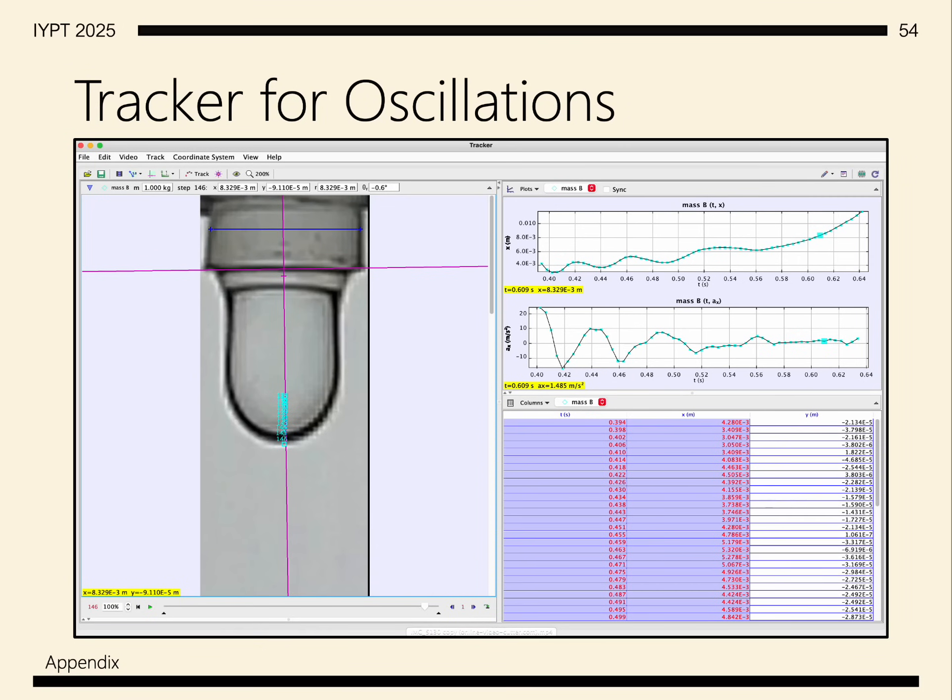Tracker can be used to find the oscillations, where you can first set the reference distance as the known diameter of a nozzle. The X or Y axis can be set to the path of travel, and each data point can be manually tracked by looking at the edge of the water.